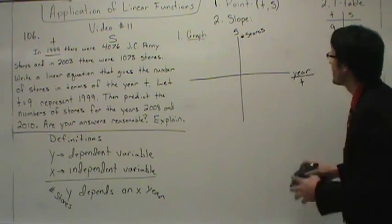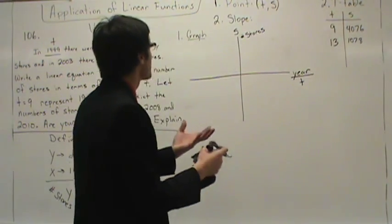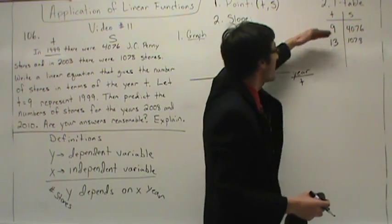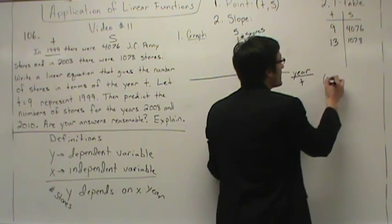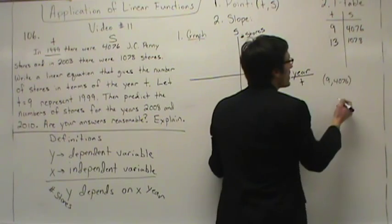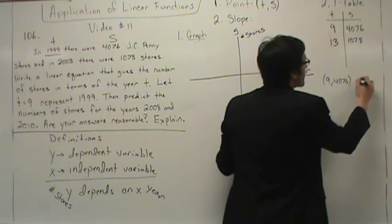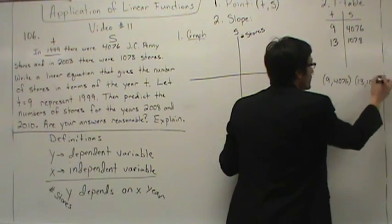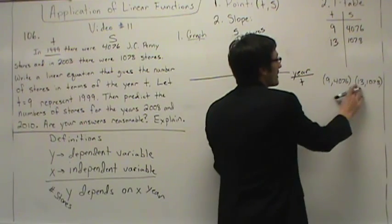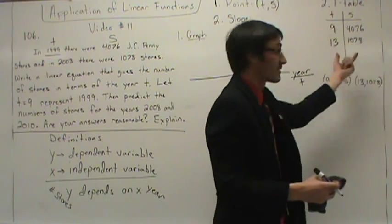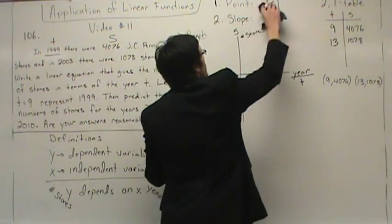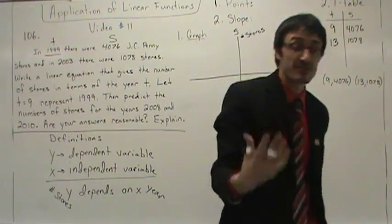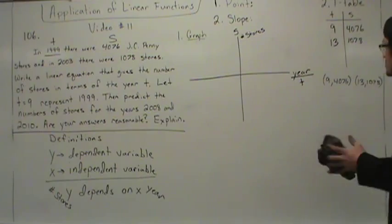We need to find point and slope. Do we have some of this information already? Yes — we have two points: the point (9, 4076) and the point (13, 1078). I always tell students: pick the point with the smaller value. 1078 is a lot smaller than 4076, so it's generally easier to use points with smaller values. Let's use the point (13, 1078).